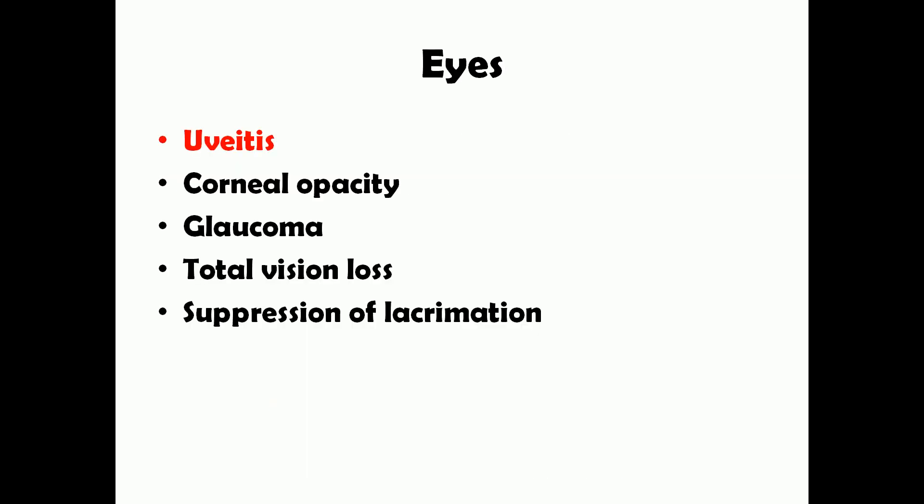Eye involvement is also very common. The most common ocular association in sarcoidosis is uveitis — inflammation of the uvea, the vascular coat inside the eye. The uvea includes the iris, ciliary body, and choroid, which can be inflamed individually or together, causing iritis or iridocyclitis. Long-standing cases can lead to corneal opacity, glaucoma, and total vision loss. Lacrimation can also be suppressed because granulomas can affect the lacrimal glands, reducing tear production.